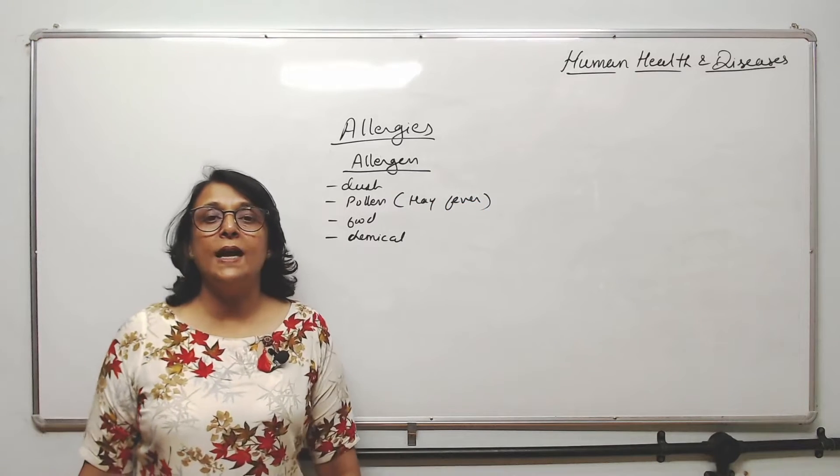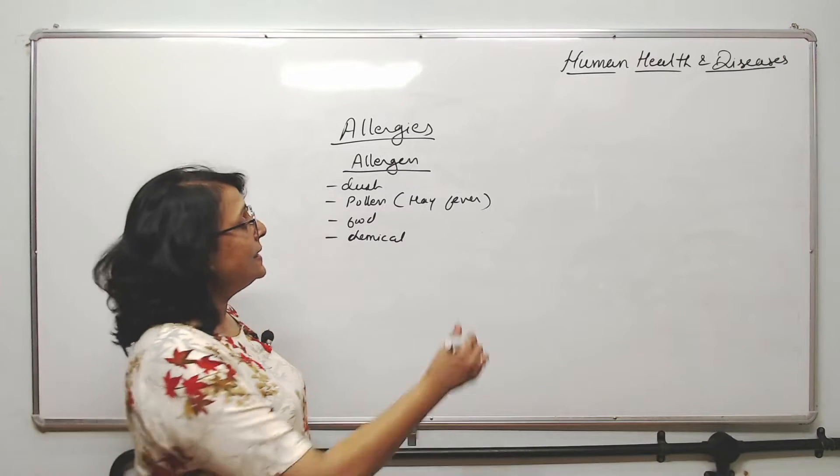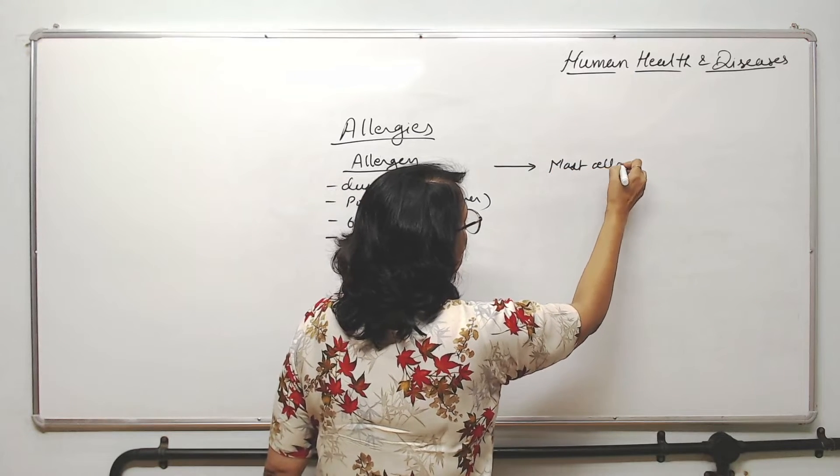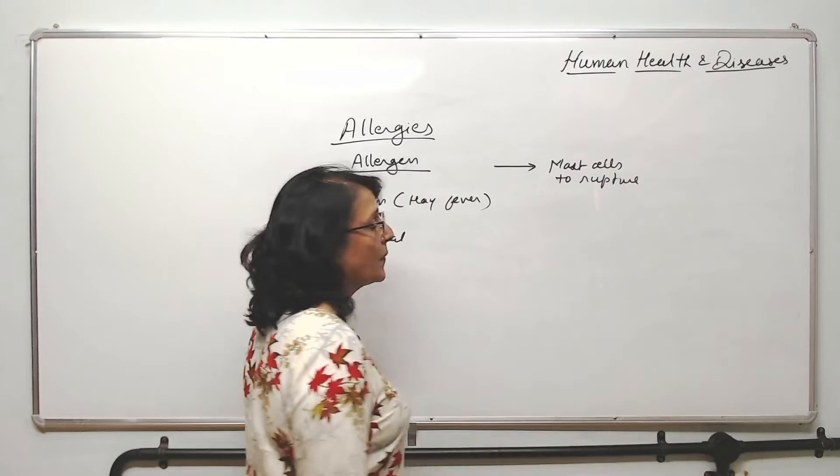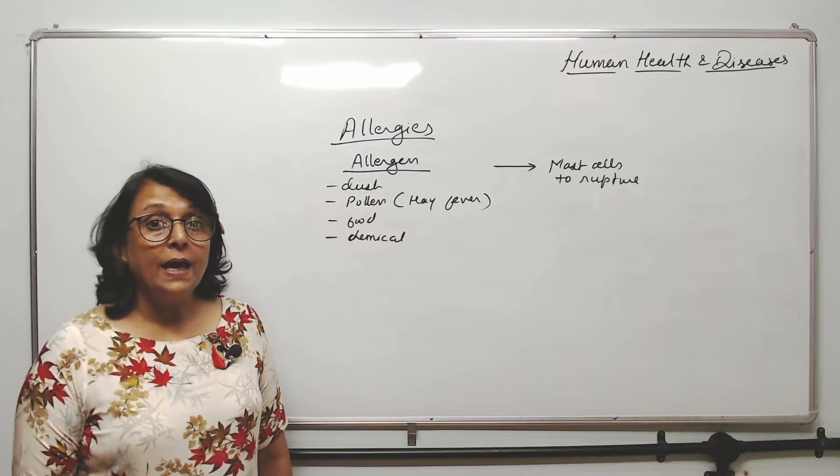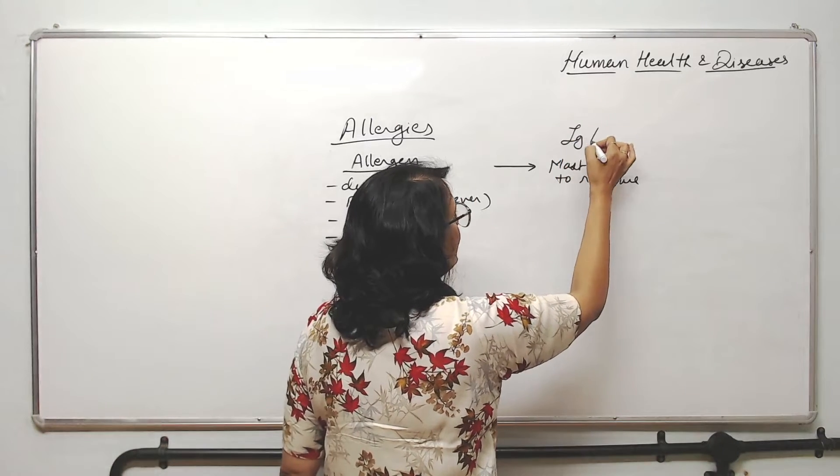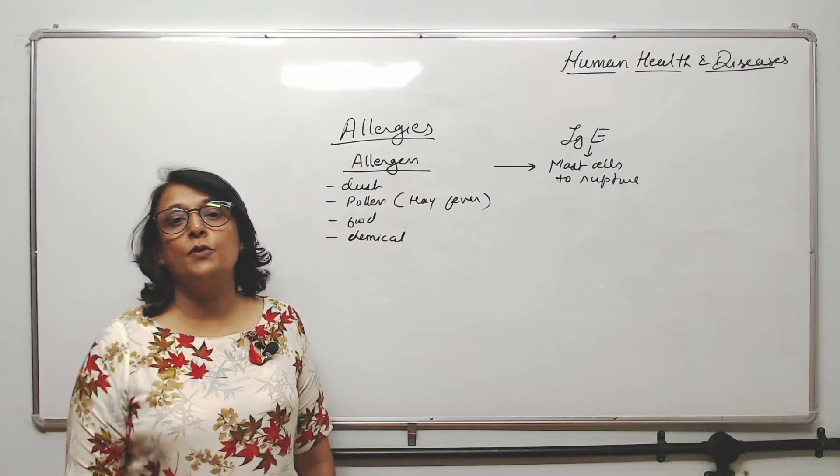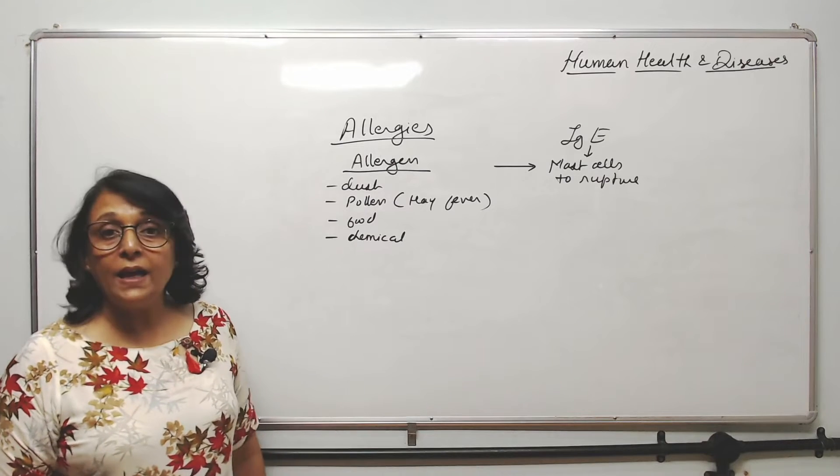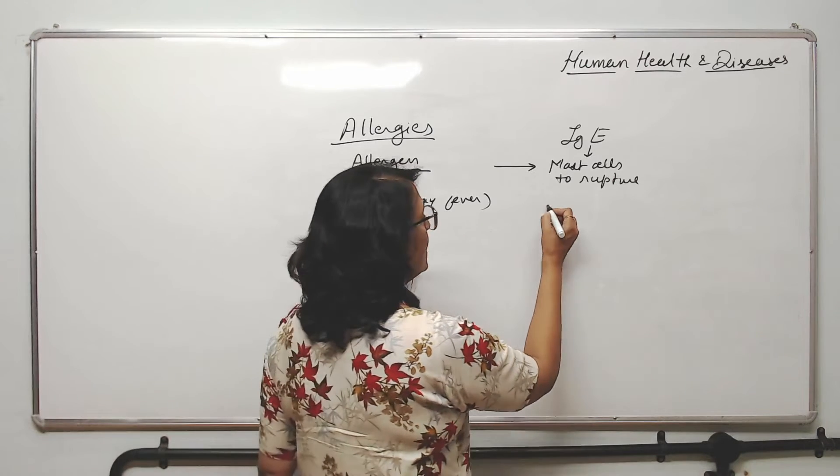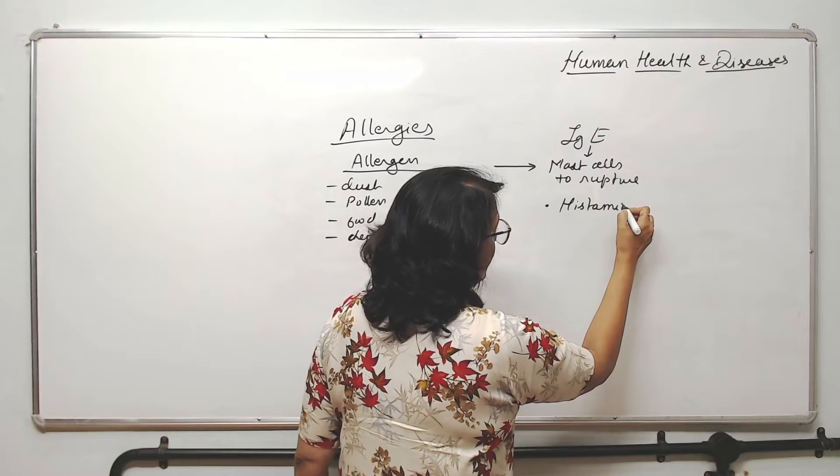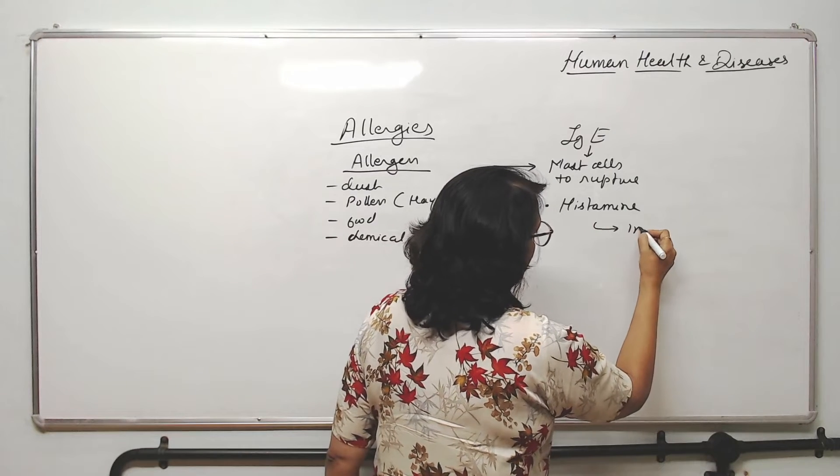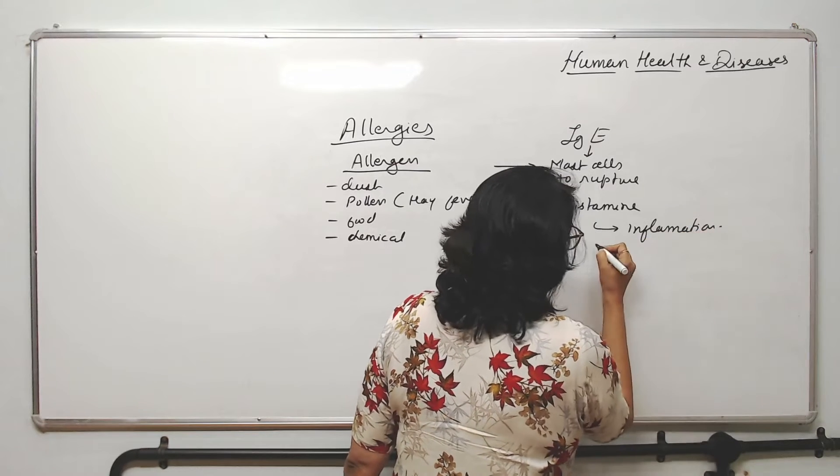So what happens when these allergens go into our body? These allergens stimulate mast cells to rupture. There are immunoglobulin E which are associated with this, and that is why when we write the function of IgE we say they are responsible for allergic reaction. They help or cause rupturing of mast cells. When mast cells rupture, a substance called histamine is released. This histamine is responsible for inflammation and swelling.